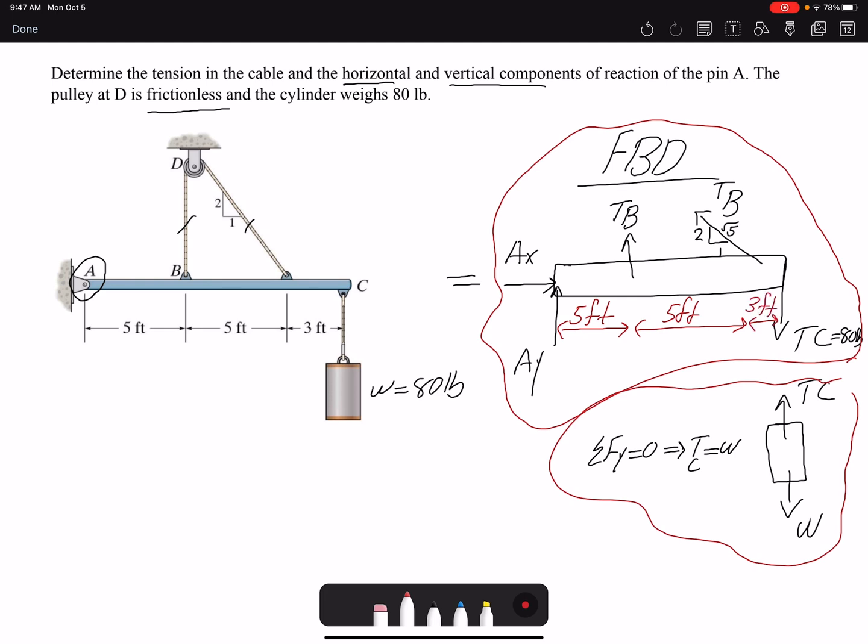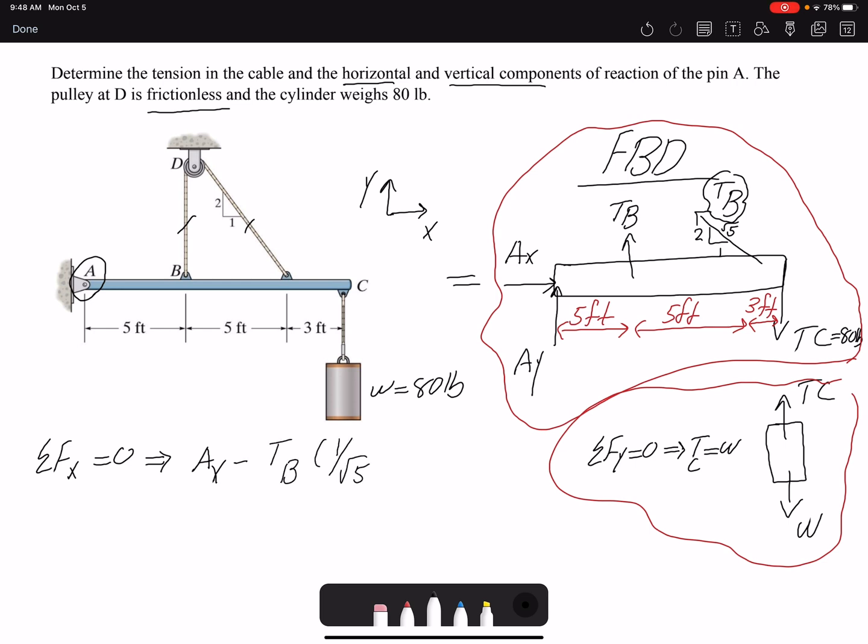I have three unknowns: Ax, Ay, and TB. In 2D I can write three equilibrium equations, so I can find my three unknowns. I start with summation of forces in x. Before that, I have my coordinate system. So summation of forces in x would be zero. Therefore I have Ax. This TB is going to create a horizontal component, which would be 1 over square root of 5 towards negative x, so negative TB times 1 over square root of 5 equals zero.